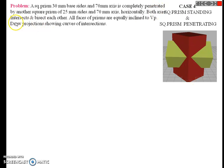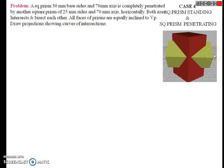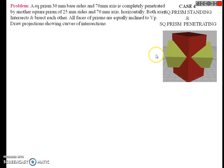Both axes intersect and bisect each other. The axis of the vertical square prism and the axis of the horizontal square prism intersect and bisect each other — bisect means at the middle height. So the horizontal square prism's axis intersects the vertical square prism's axis at its midpoint.